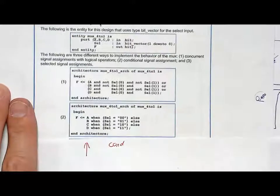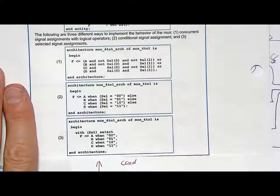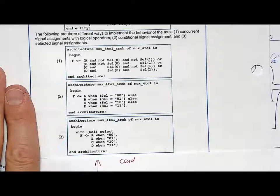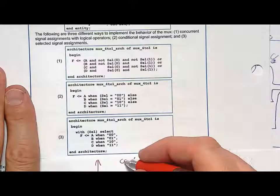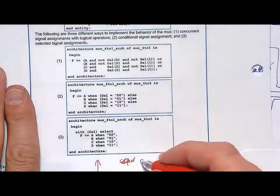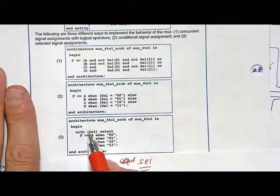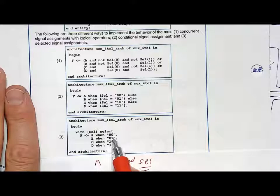Now when you go to a selected signal assignment, it becomes even more compact. Here is a four to one multiplexer using selected signal assignments. All you do is list with select, and then you give it A, B, C, or D when this select code.